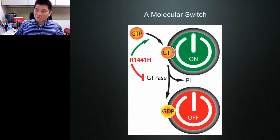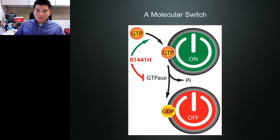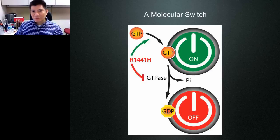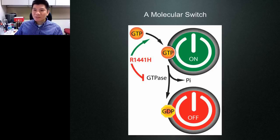Our working model for the ROC domain is that it is a molecular switch: when bound to GTP it is in the 'on' state, and by itself it slowly hydrolyzes GTP to GDP, effectively turning itself off. In the disease-associated mutation that causes Parkinson's disease, this hydrolysis process is decreased, and at the same time affinity for GTP increases. The combined effect locks this enzyme in a persistently 'on' state, potentially activating kinase activity. That is our working model.